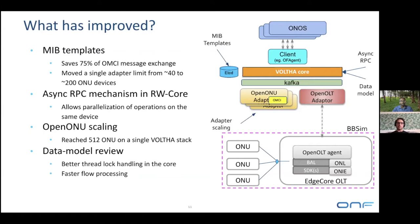Moving on, the next biggest thing we tackled was how we were handling logs in the core. This information really came out from the scale test — analyzing the logs and various threads we were creating and managing. It turns out we were storing too much information into the same key in the data store, which was forcing us to have multiple locks on data that could be separated. So we separated it, and we were able to achieve a way faster flow processing thanks to the new parallelization we could achieve.